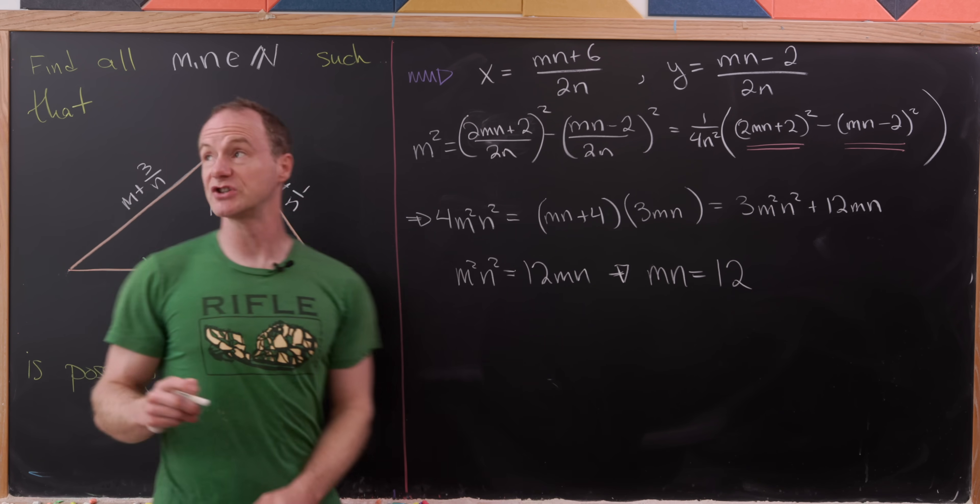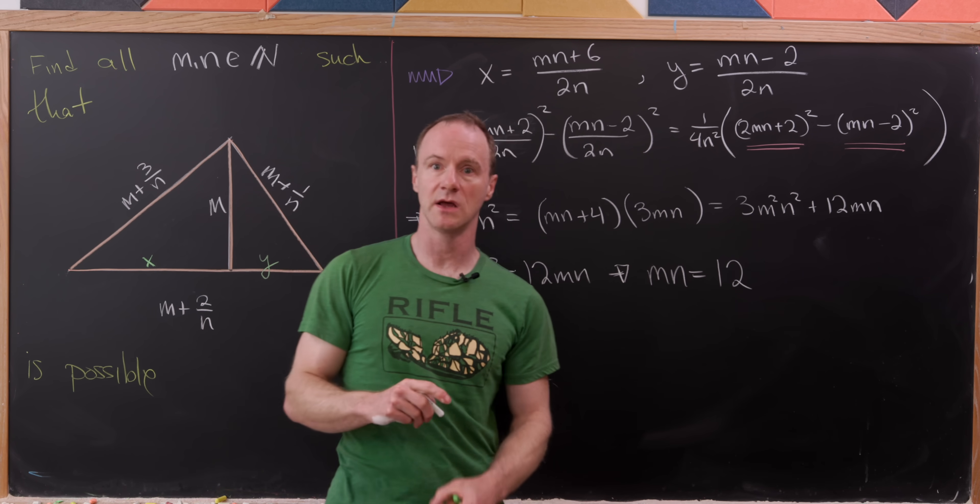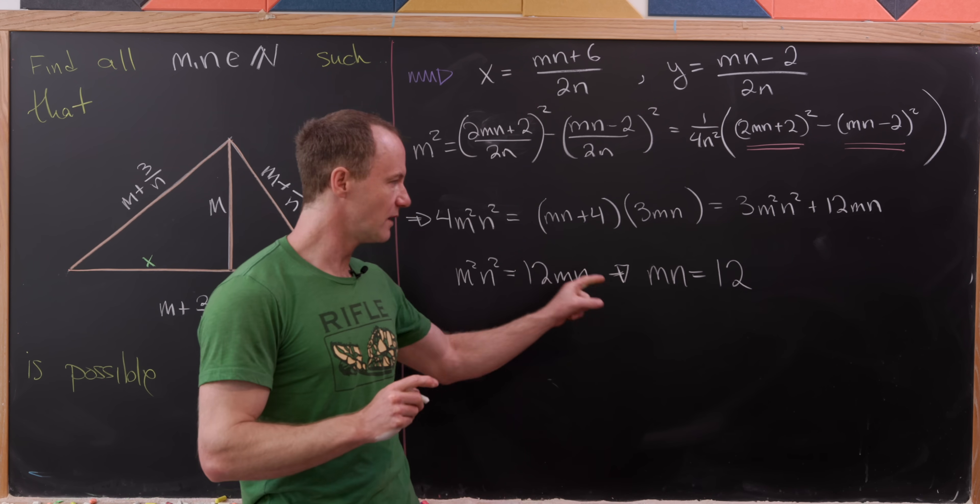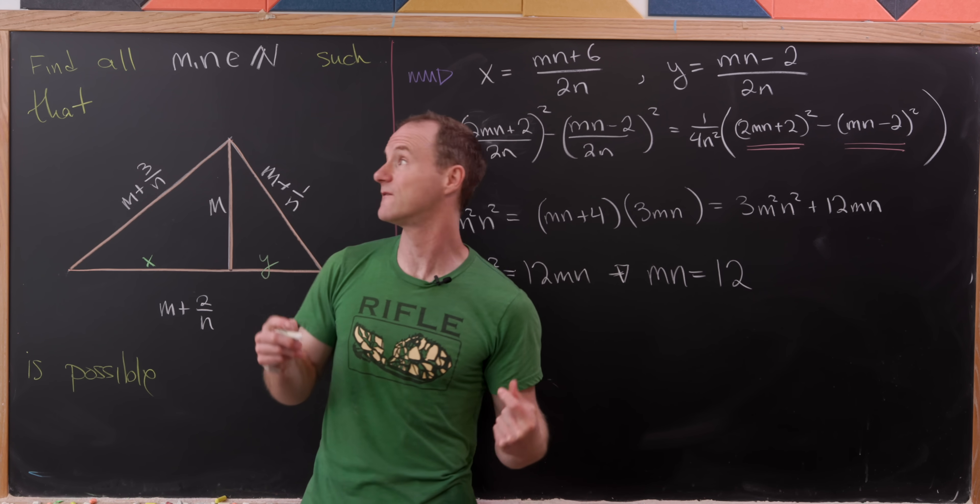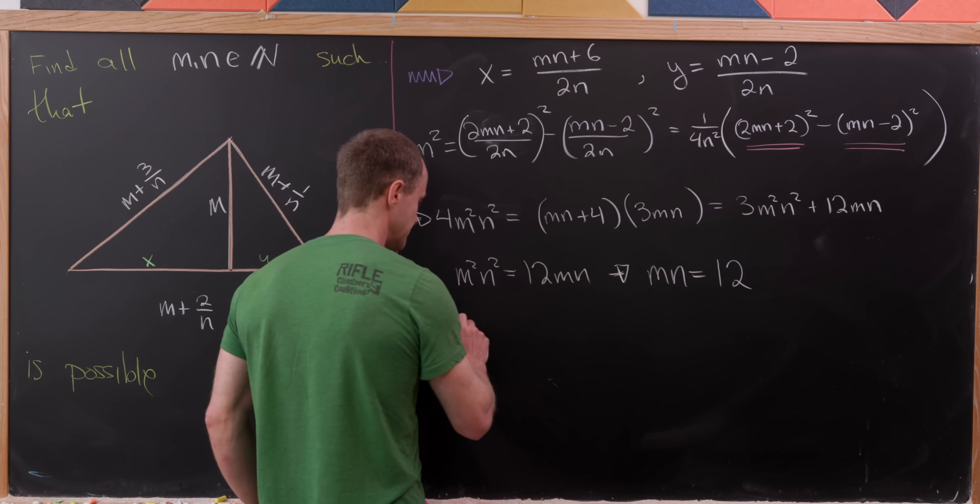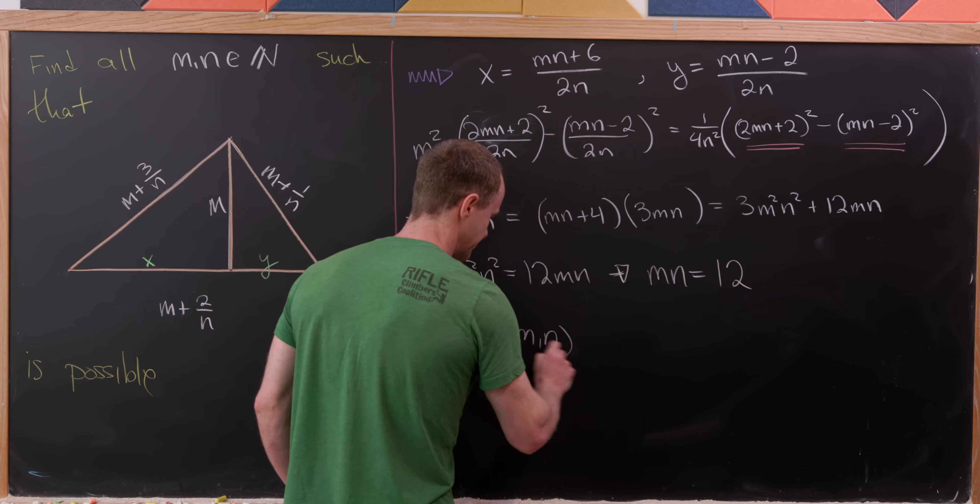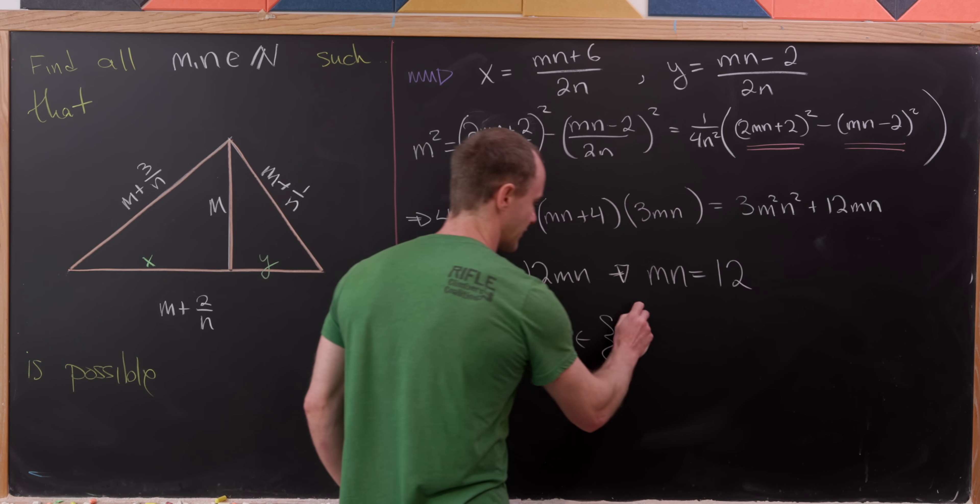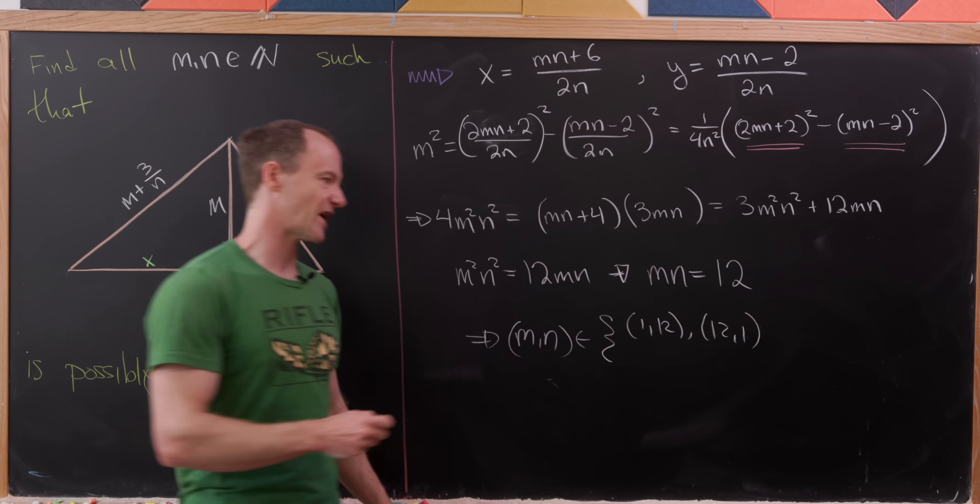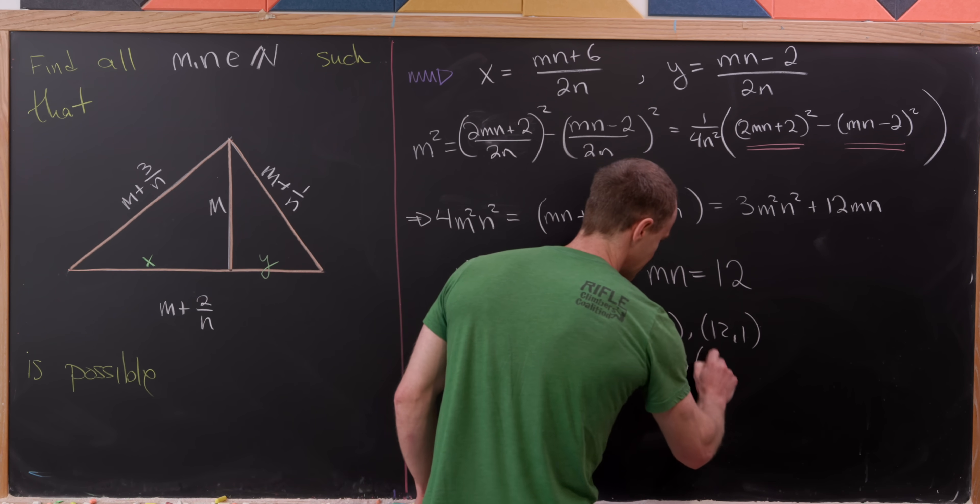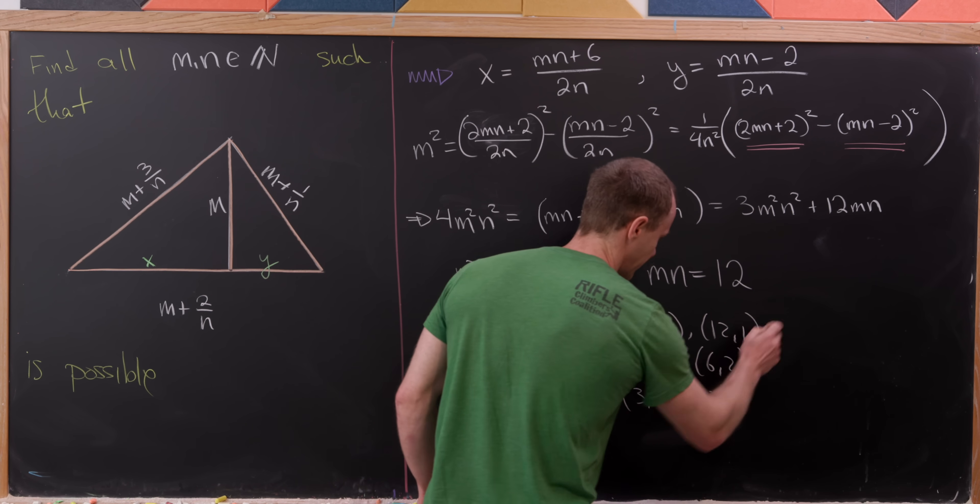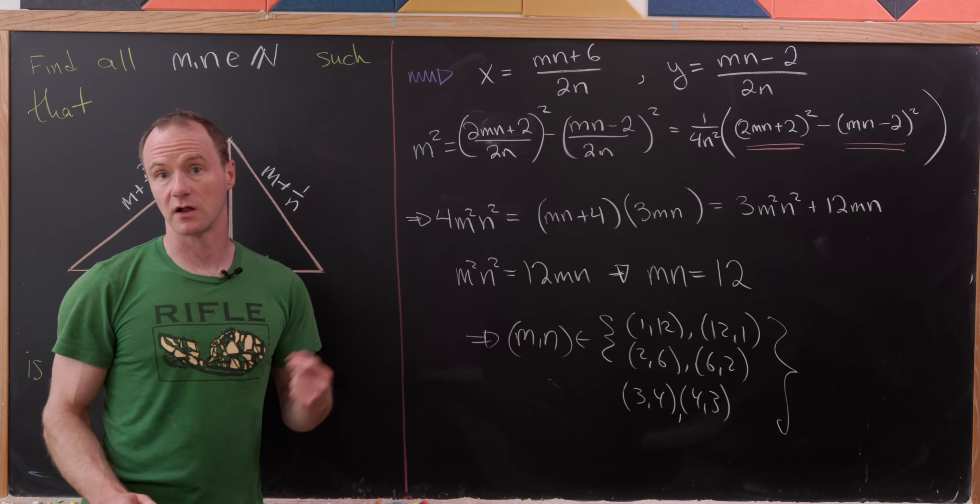But now we're pretty much done because check it out. Our goal is to find all m and n so that this is possible, but we just showed that that was equivalent as to finding all natural numbers m and n that have a product of 12. So that tells us that we have the following possibilities. So m n is either 1 and 12 or 12 and 1. So essentially we're just looking for factor pairs. We could have 2 and 6 or 6 and 2, or we could have 3 and 4 and 4 and 3. And I believe those are all of the possibilities.